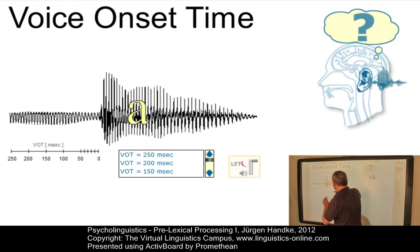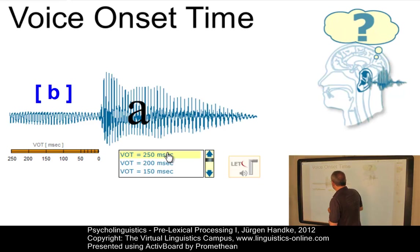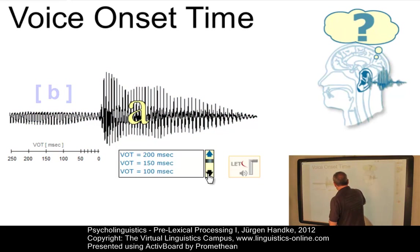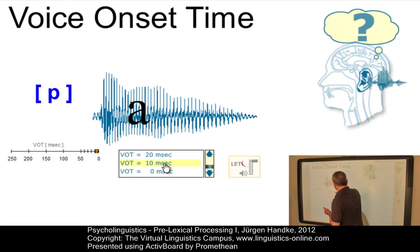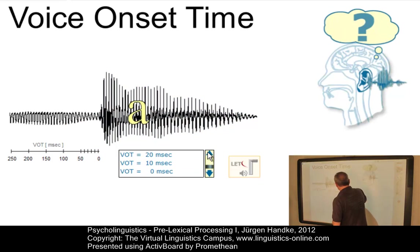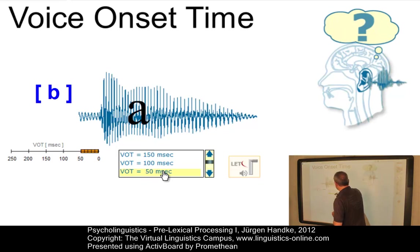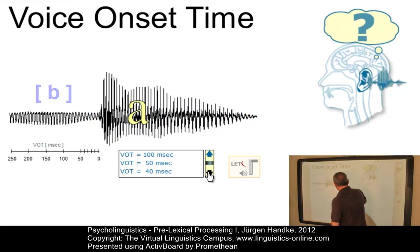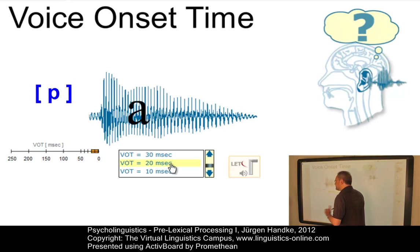If voice onset time is long — say 250 milliseconds — we perceive BA, clearly the voiced variant. If by contrast we make it extremely short, say 10 milliseconds, we perceive PA. At 50 milliseconds the result is still BA, the voiced variant. At 20 milliseconds the result is the voiceless variant, PA.